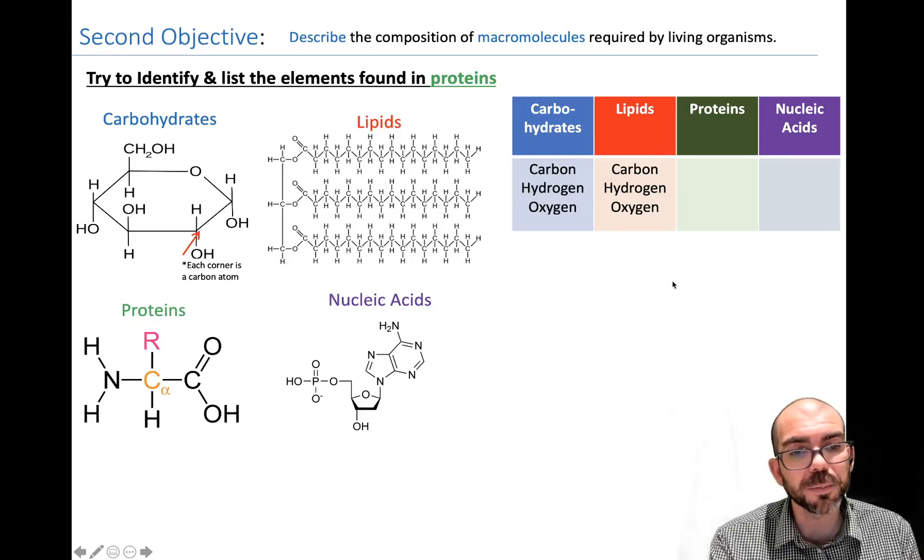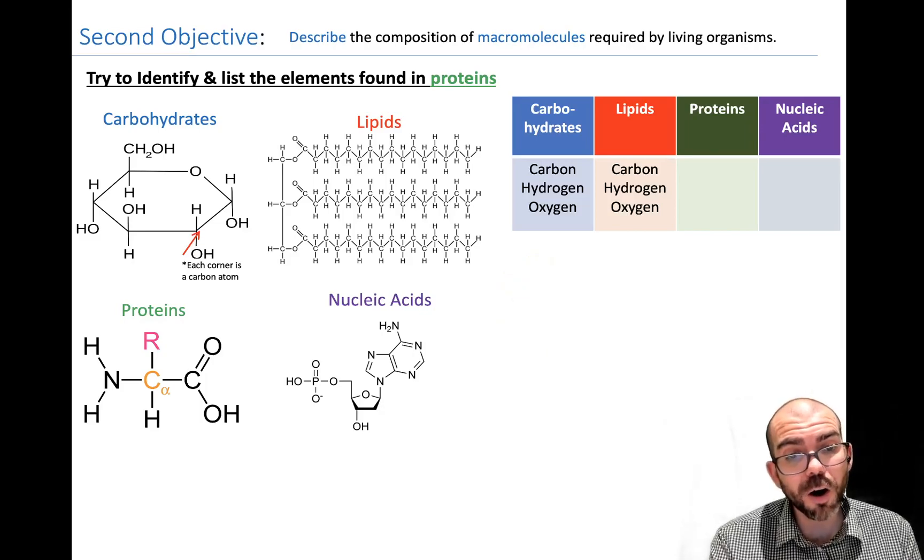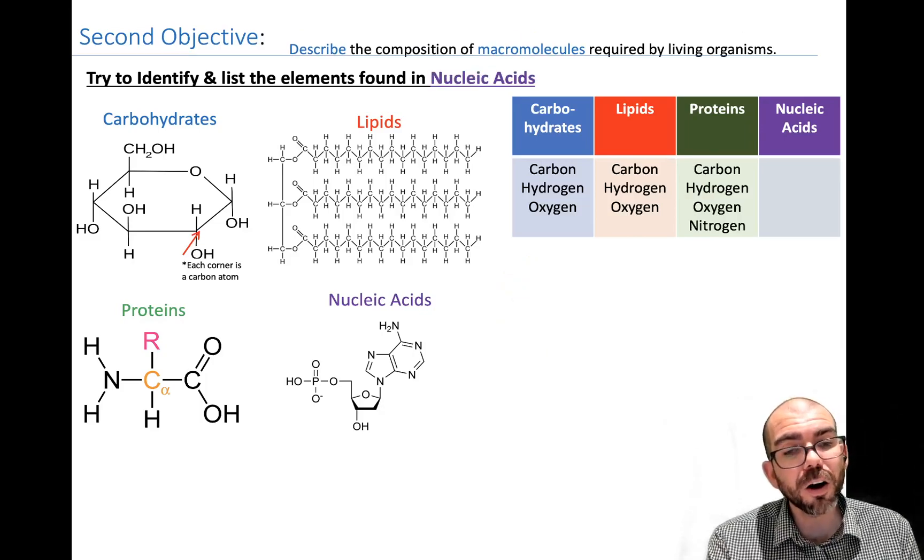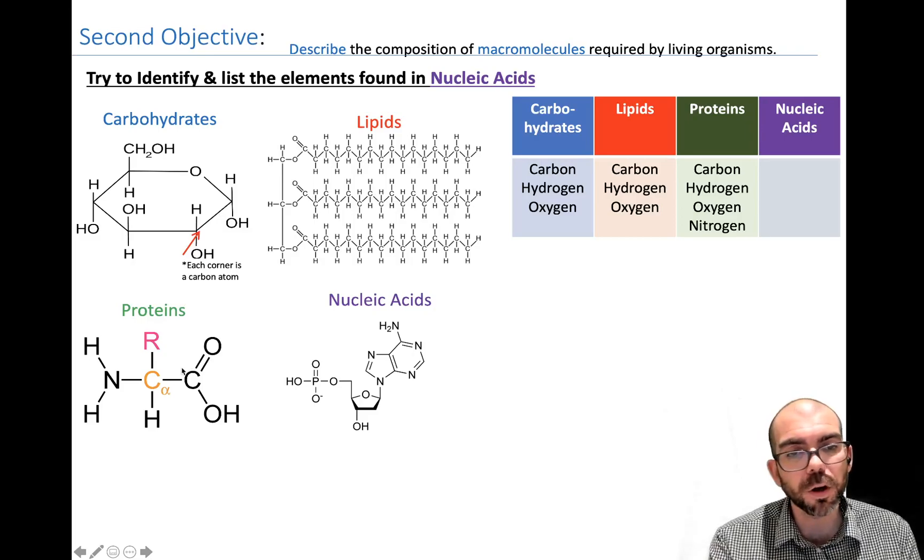Let's try proteins now. Try and identify the atoms in a protein. A protein has carbon, hydrogen, and oxygen, but it also has nitrogen. So if you're comparing a protein to carbs and lipids, that is a great tell that you're working with a protein. If that nitrogen is there along with carbon, hydrogen, and oxygen, you could be working with a protein.